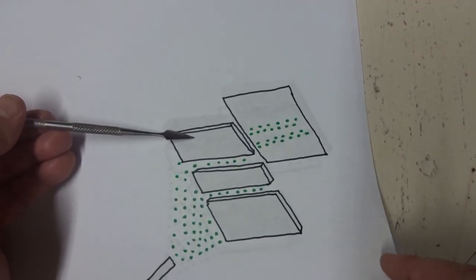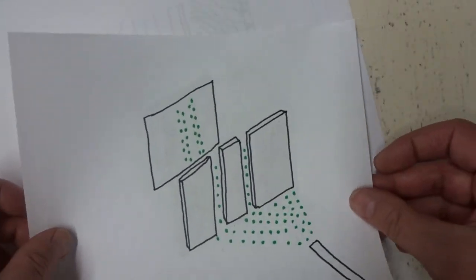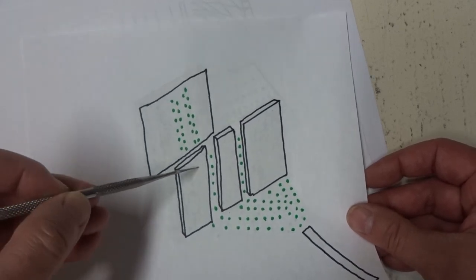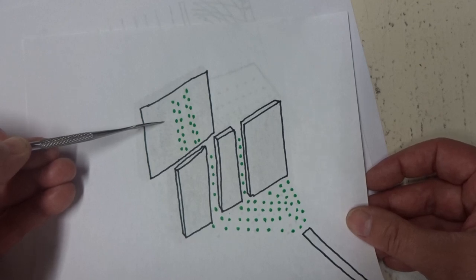The double slit experiment. In 1801, Thomas Young used electrons through a barrier and looked at it on a plate for the pattern that it would produce.